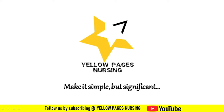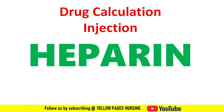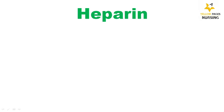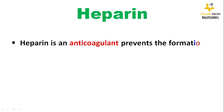Hello everyone, welcome to Yellow Pages Nursing. In today's video we will be discussing drug calculation of injection heparin. If you have not subscribed the channel, please subscribe and do not forget to hit the bell icon to receive instant notifications. Please do not skip the video in between because we have different types of orders explained. Injection heparin is an anticoagulant which prevents the formation of blood clots.